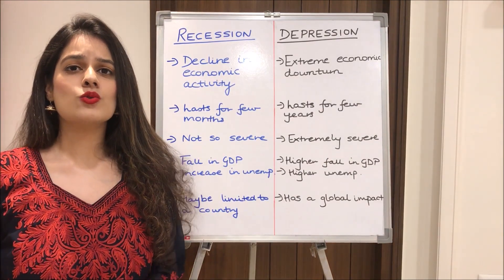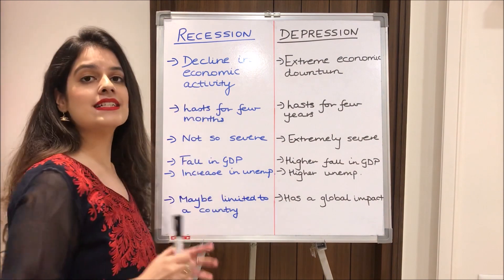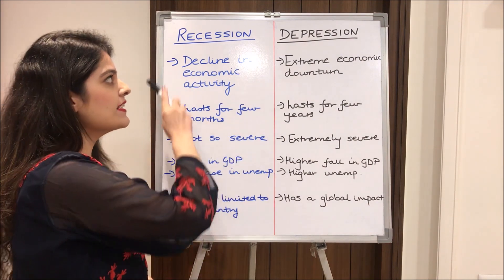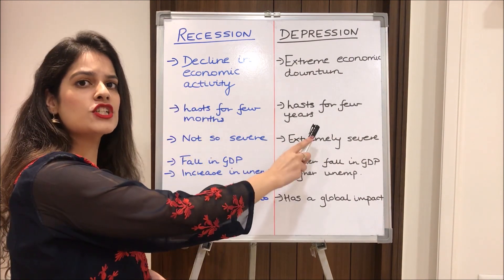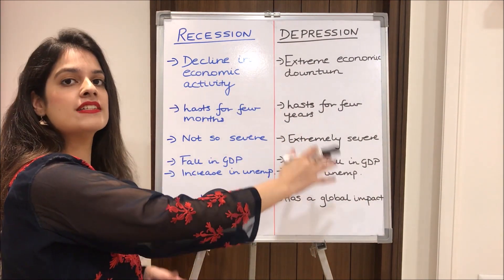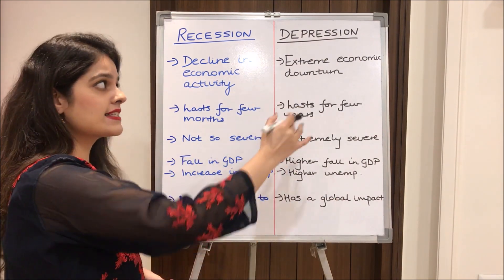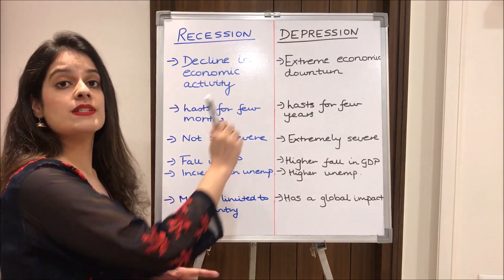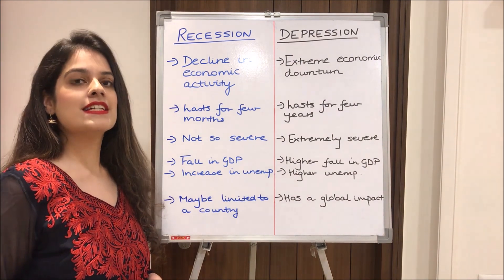First, I'll discuss two terms often confused and thought to be the same: recession and depression. Recession is the decline in economic activity, whereas depression is an extreme economic downturn in the whole economy. A recession later on leads to depression. A recession lasts for a few months whereas a depression lasts for a few years. Recession is not very severe, but depression is extremely severe. Under recession there is a fall in GDP and a rise in unemployment; depression sees a higher fall in GDP and a higher rise in unemployment. Recession may be limited to one country whereas depression definitely has a global impact. The situation of COVID-19 is an example of a depression.